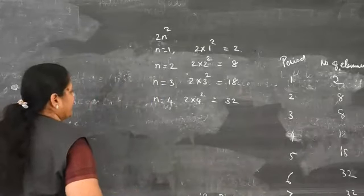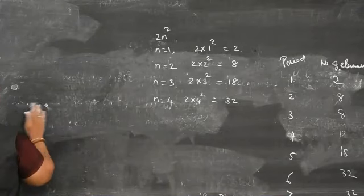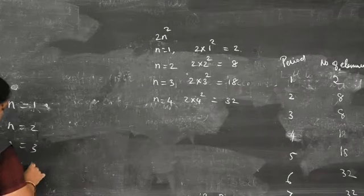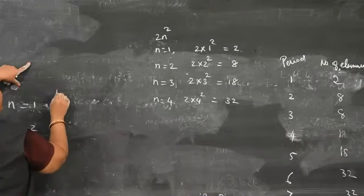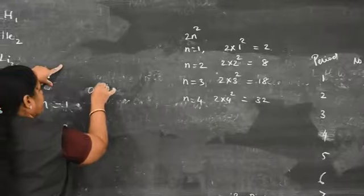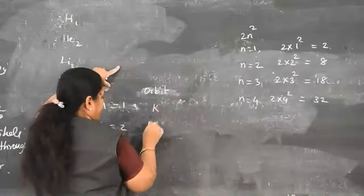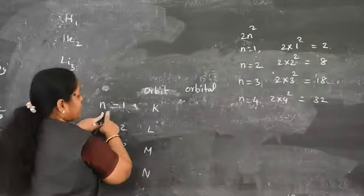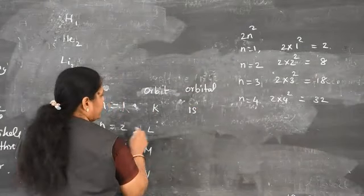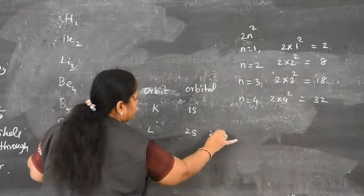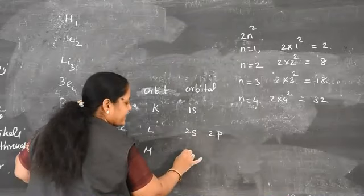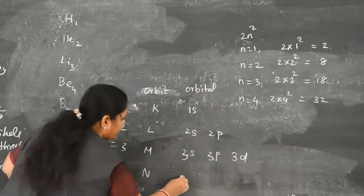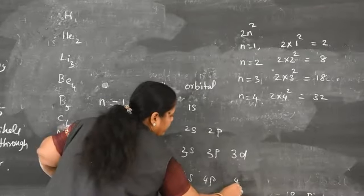Shell K (n=1): 2 electrons in S orbital. Shell L (n=2): 8 electrons — 2 in S, 6 in P. Shell M (n=3): 18 electrons — 2 in S, 6 in P, 10 in D. Shell N (n=4): 32 electrons — 2 in S, 6 in P, 10 in D, 14 in F. Maximum electrons in S=2, P=6, D=10, F=14.